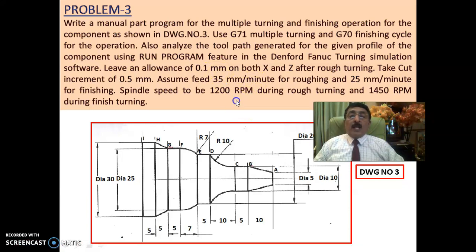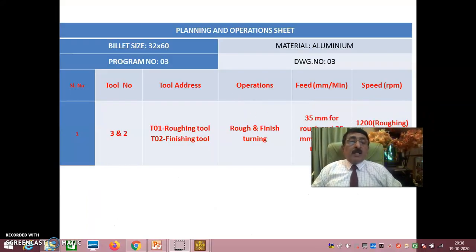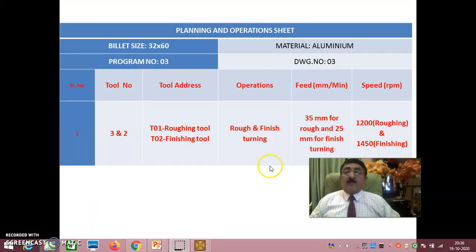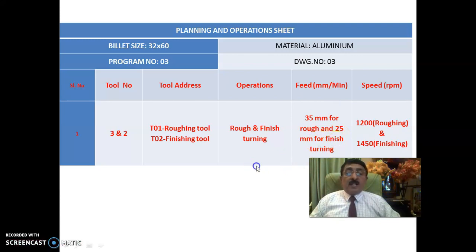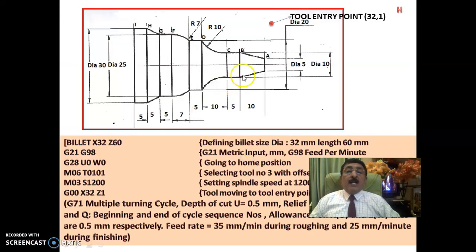Now we will totally concentrate on the Fanuc turning simulation software. In the planning and operation sheet, I selected two separate tools — a roughing tool and a finishing tool. 1200 RPM for roughing, 1450 RPM for finishing. Feed is 35 mm/min for roughing and 25 mm/min for finish turning.